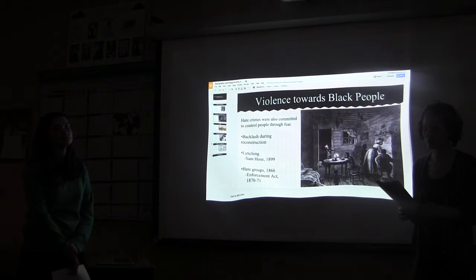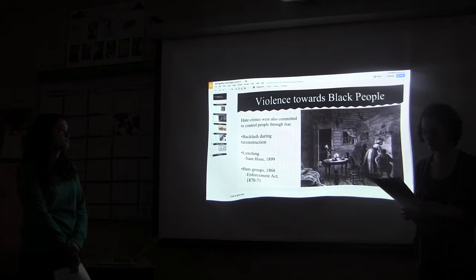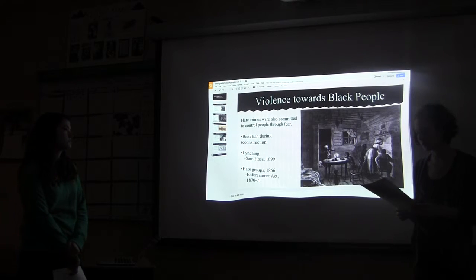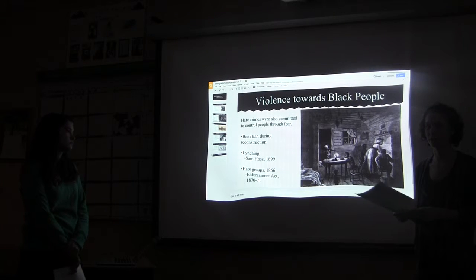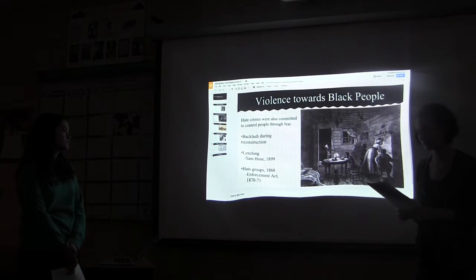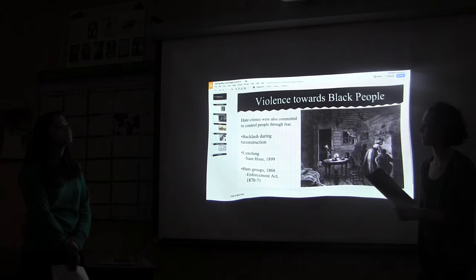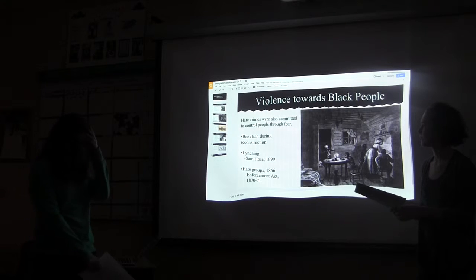The lynchings themselves became carnivals. In one case in 1899, a black man named Sam Hose was accused of killing his white employer and raping his wife. Word of the impending lynching brought 4,000 visitors from Atlanta, and railroad companies opened up special lines to the area to compensate for the influx of passengers. All of these hate crimes were done so that when legal measures couldn't stop African Americans from voting, the fear that hate crimes caused would stop them.